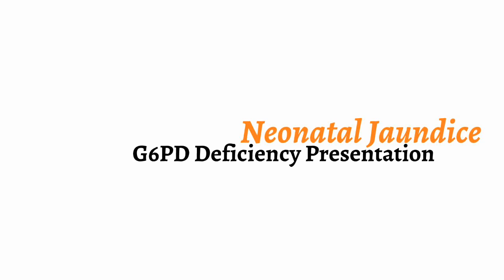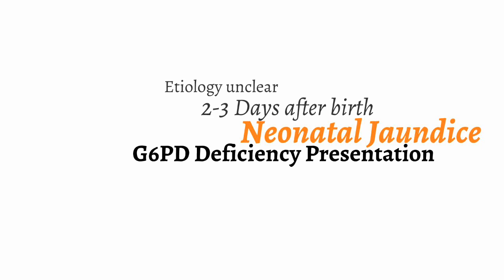G6PD deficiency commonly presents in two ways. The first is several days after birth when a baby becomes jaundiced. Generally, there is no jaundice at birth, but the jaundice occurs several days later. The inciting cause for triggering the episode of hemolysis with G6PD deficiency is unclear. Jaundice in the neonate is treated like many other diseases that cause neonatal jaundice, with phototherapy, to prevent kernicterus. Kernicterus is when, due to high levels of bilirubin, the bilirubin deposits into the gray matter of the brain, leading to neurological dysfunction and altered mental status.